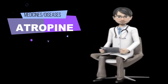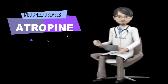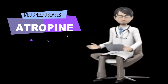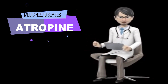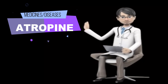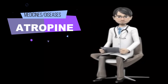What side effects can ophthalmic atropine cause? Atropine may cause side effects. Tell your doctor if any of these symptoms are severe or do not go away: eye irritation and redness, swelling of the eyelids, sensitivity to bright light, dry mouth, red or dry skin, and blurred vision.